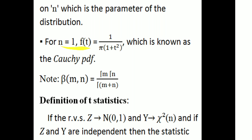For n equal to 1, f(t) becomes 1/π · (1 + t²), which is known as the Cauchy probability density function. Note that the beta function β(m,n) = Γ(m)·Γ(n) / Γ(m+n).